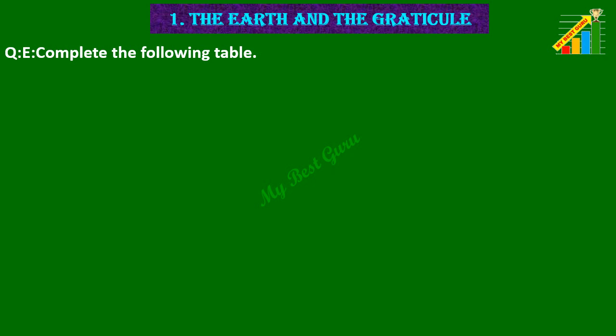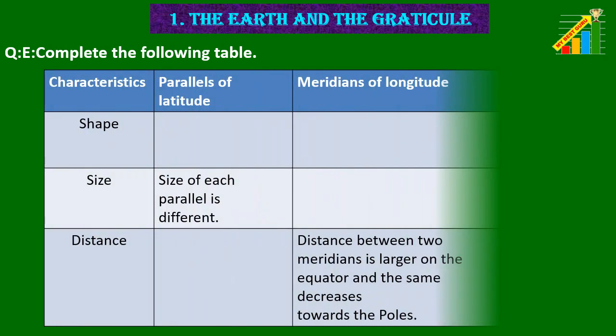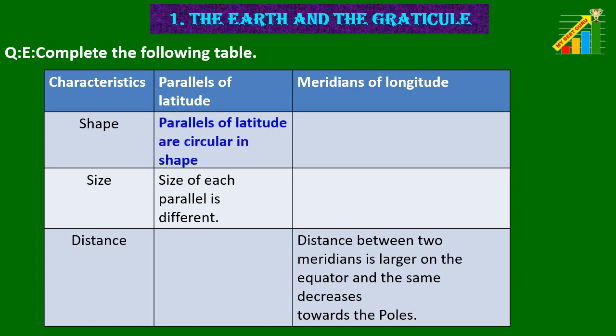Question E. Complete the following table. The table is given in first column characteristics, second column parallels of latitude, third column meridians of longitude. 1. Shape: Parallels of latitude are circular in shape while meridians of longitude are semicircular in shape.